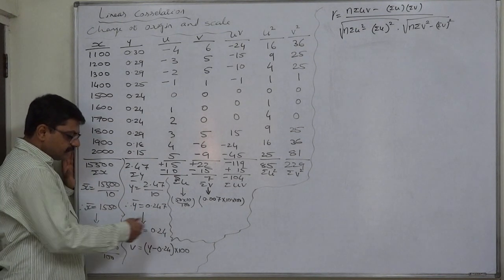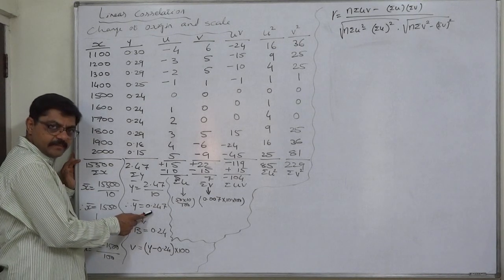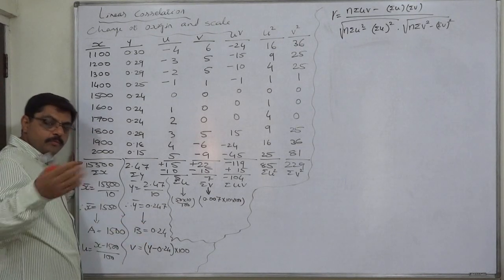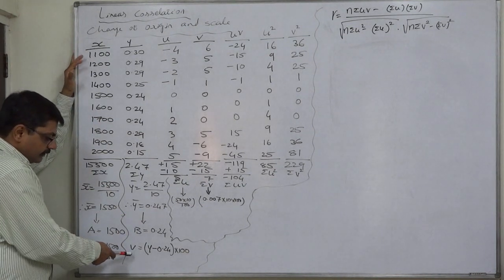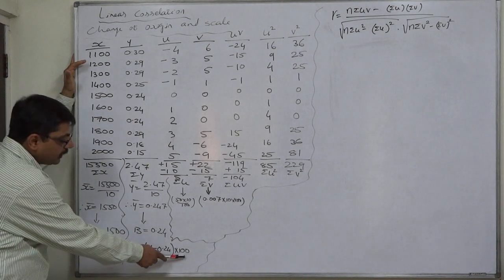As per my advice, we're going to take the assumed mean which is less than the arithmetic mean. So we're going to take it as 0.24, not 0.25.